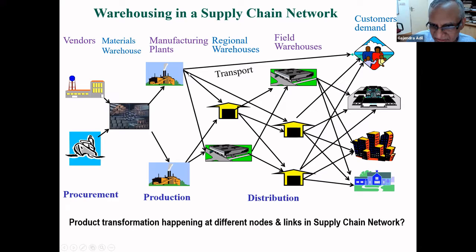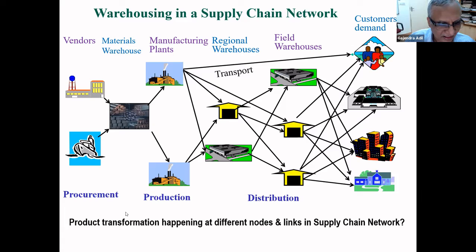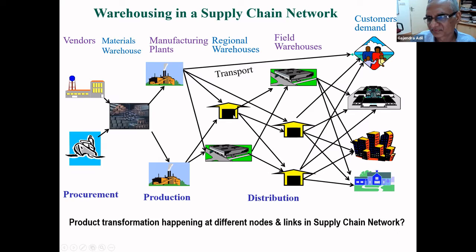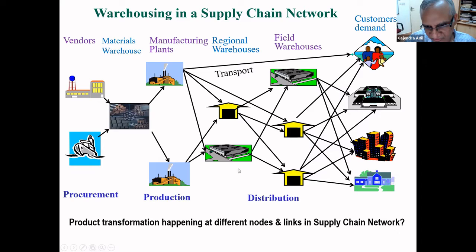Once you get the product converted, you move it across the distribution channel. You can have a network structure here all the way to the final customer. Now, what kind of things happen to the product? What kind of transformation happens starting from the left side to the right side? So in production — let's say this is an auto company making automobiles — the suppliers may supply gear or some steel sheet. What value addition happens at this stage?